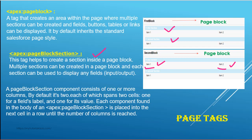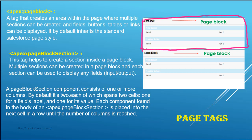Every component in the body of the pageBlockSection is placed into the next cell in a row until the number of columns is reached. If you specify two columns, the third element goes to the next row. The pageBlock also inherits the standard Salesforce page style automatically — one column is for a field label and one for the value.